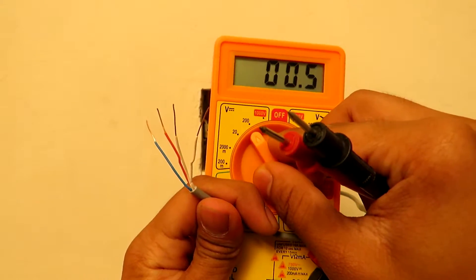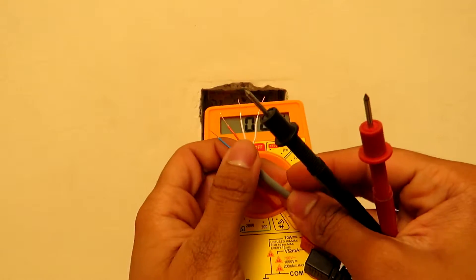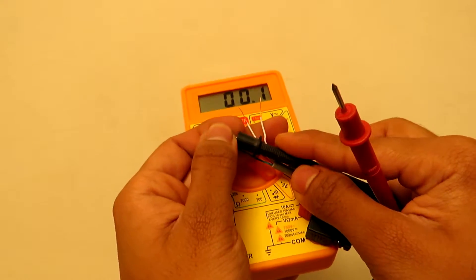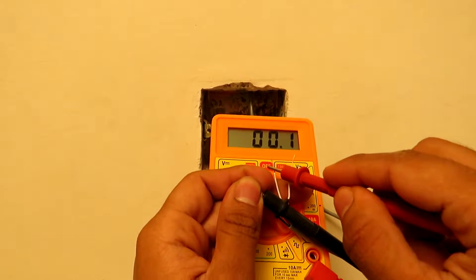After skinning them, we shall place one lead of the voltmeter to the blue colored wire and the other lead to the white wires one by one. So here I am getting a voltage between blue wire and the white wire, so that is one pair.